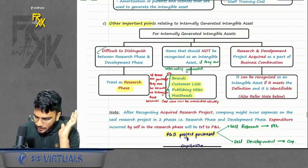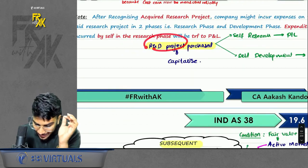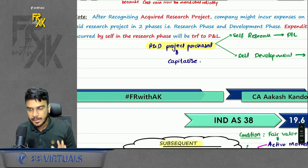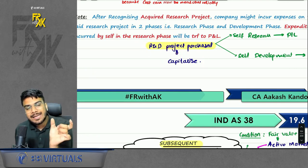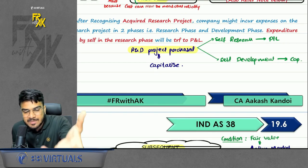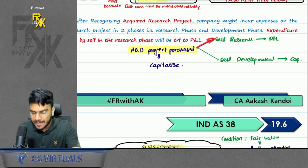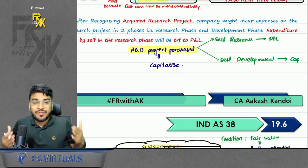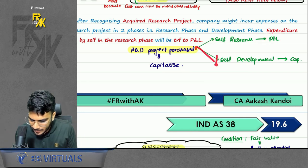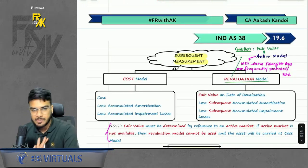Finally, regarding research and development projects: if we acquire an R&D project from someone, we will capitalize the R&D project. But if we acquire an incomplete research project and then conduct further self-research on it, such expense will be transferred to profit and loss. However, self-development cost incurred on this project — you will capitalize it. This was initial measurement done.